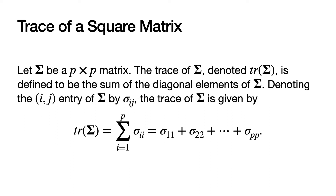Let CAP-SIGMA be a P by P matrix. The trace of CAP-SIGMA, which we will denote by TR as an abbreviation of trace, is defined to be the sum of the diagonal elements of CAP-SIGMA. Denoting the ij entry of CAP-SIGMA by lowercase sigma sub ij, the diagonal elements are such that the row index and the column index are the same. So the trace of CAP-SIGMA would be sigma-1,1 plus sigma-2,2 plus sigma-3,3, and so forth out to sigma sub P,P.